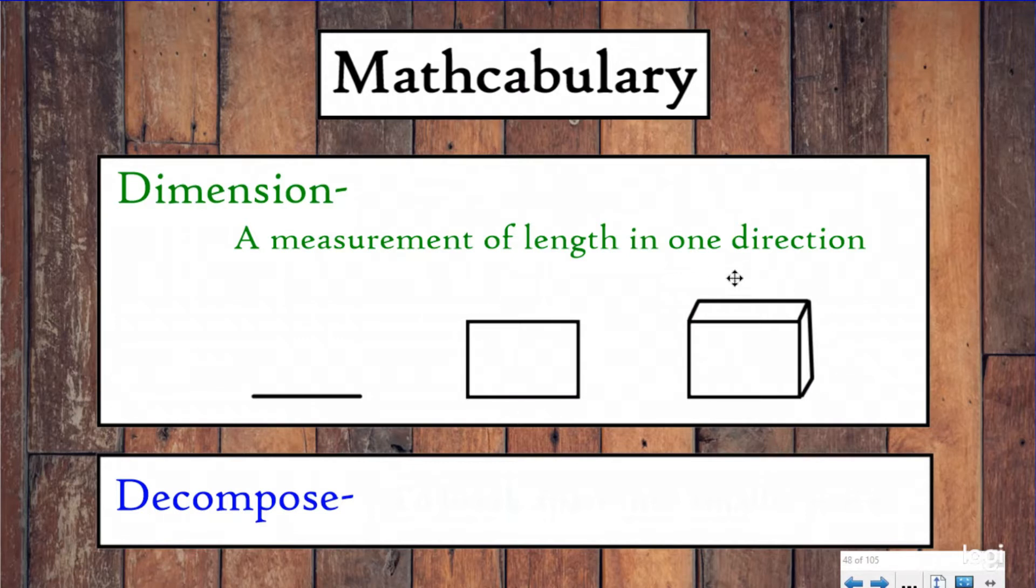And then here we have a three dimensional object, which is a cube or rectangular prism. It is three dimensional because we can measure it with its length, its height, and its width or depth. So we can measure in three different directions, making it three dimensional. And when I say the word decompose, what we're talking about today is to break it apart into smaller pieces. Let's take a look at how we can use these mathcabulary terms in our lesson today.